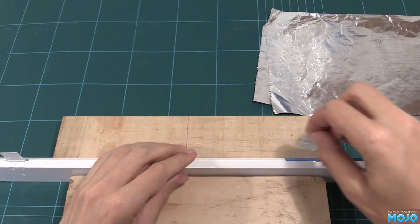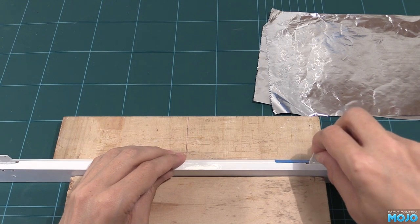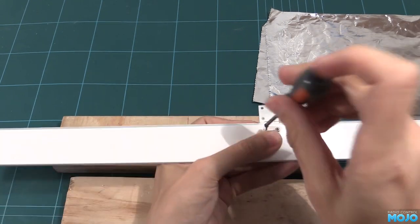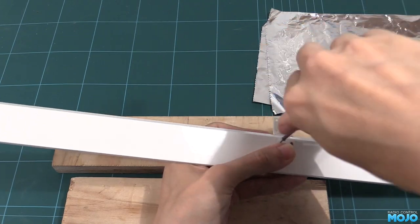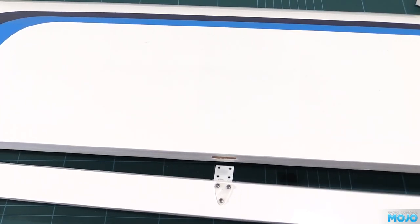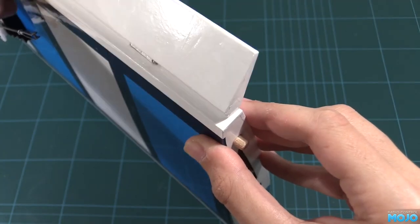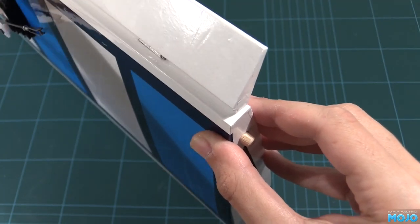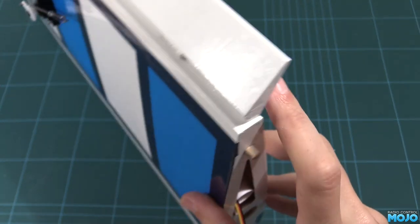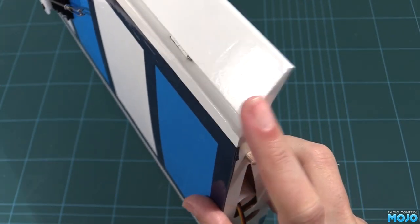Slide the hinges into the ailerons and refit the horn. Try and get the hinges roughly into the right position with the hinge nice and straight. Then offer the aileron up to the wing and gently press in the hinges. Work the ailerons up and down for a minute or so. The hinges will slowly move into the right position. Then you can put the wing to one side while it all hardens up.